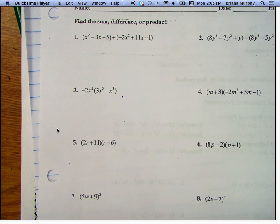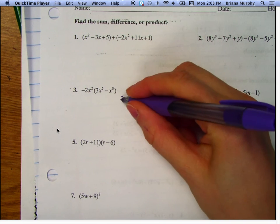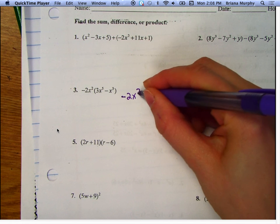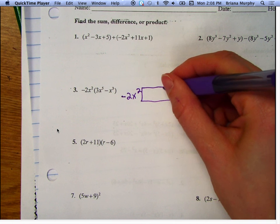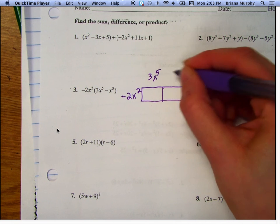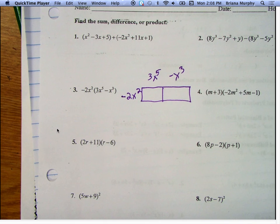So whenever I'm dealing with anything that's multiplication, you can make it into a box. So I'm going to put -2x² on the outside, and it's just going to be a 1 by 2 box. And 3x⁵ and -x³, right?